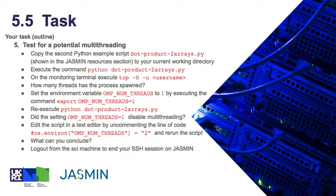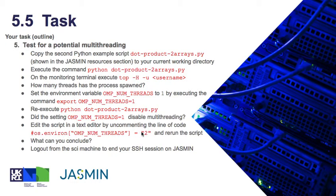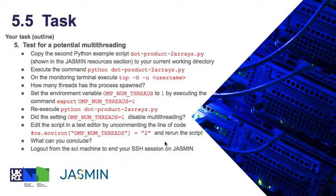There is another way to implement this variable, which is within the Python script itself, by uncommenting the line which sets OMP_NUM_THREADS to 2. Make this change, save the file, and rerun it, and see how many threads are spawned this time.